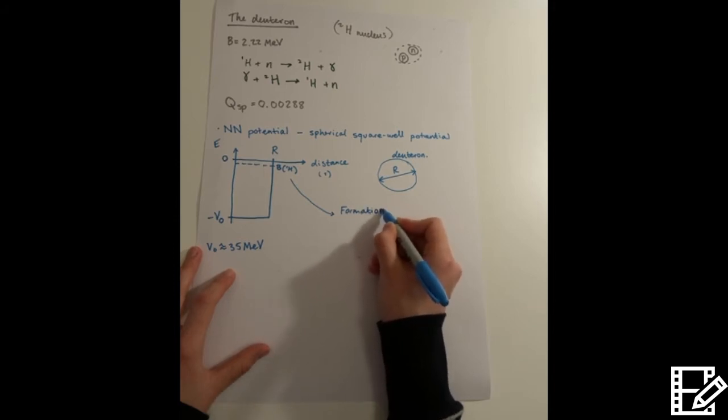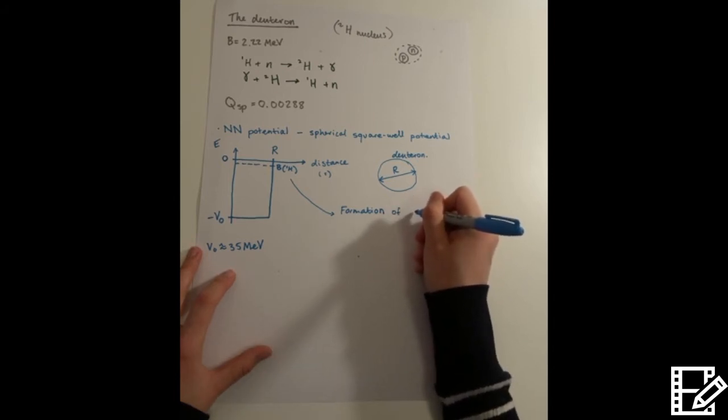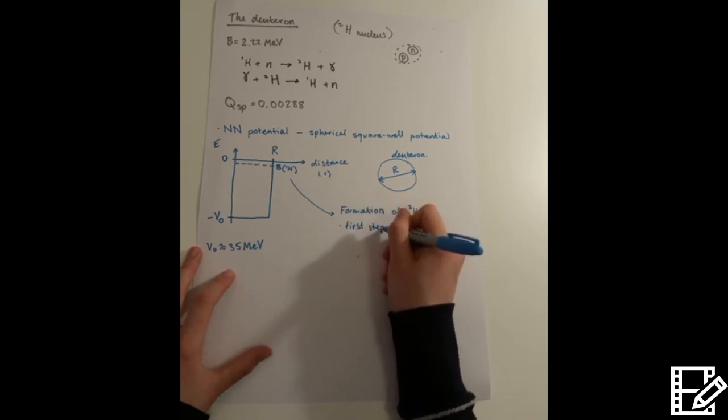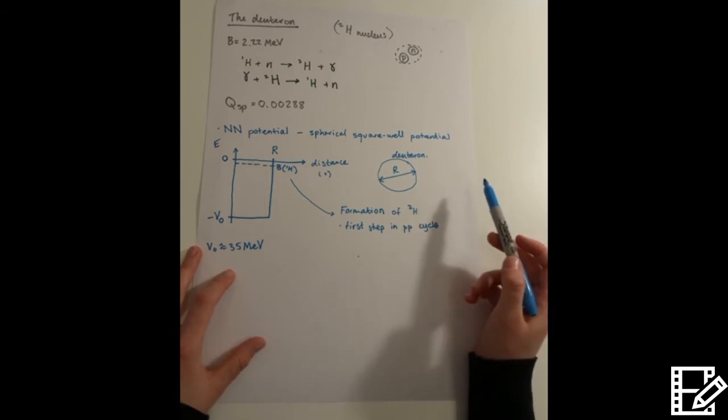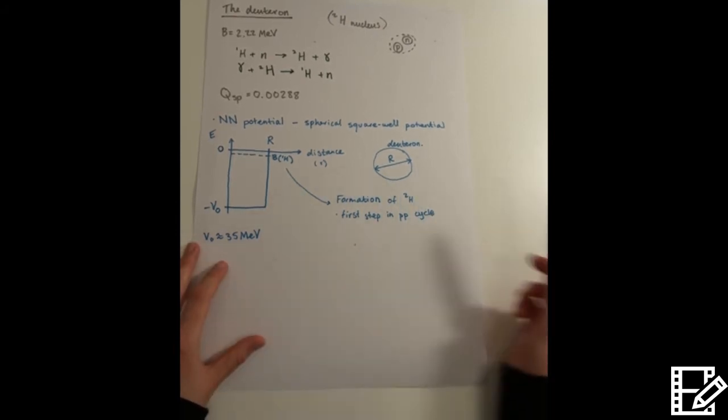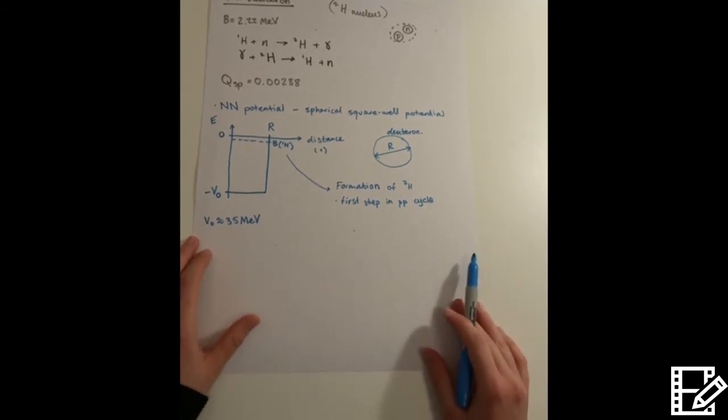And this is also related to the formation of stable matter in the early universe. So if we didn't have deuterons, then no stable matter would have formed, and we wouldn't have the universe as it exists today.